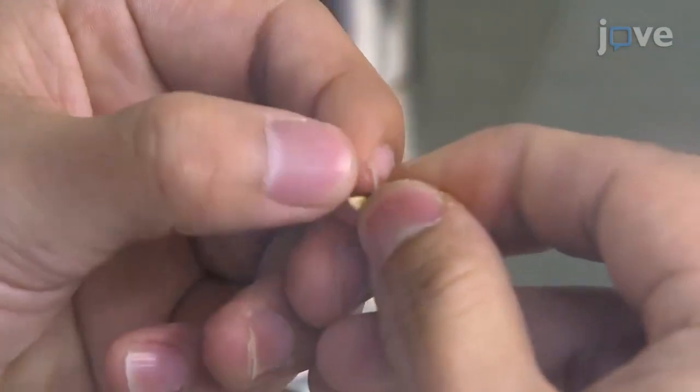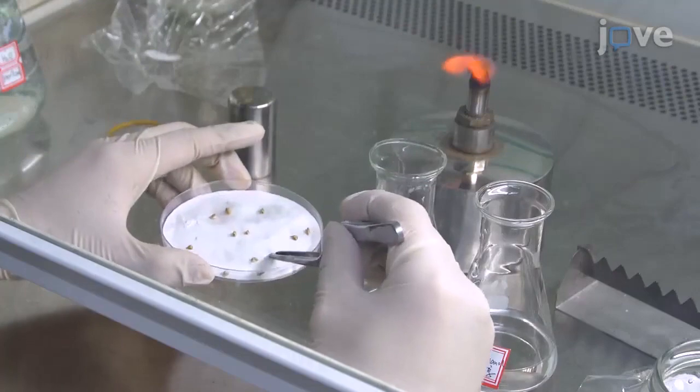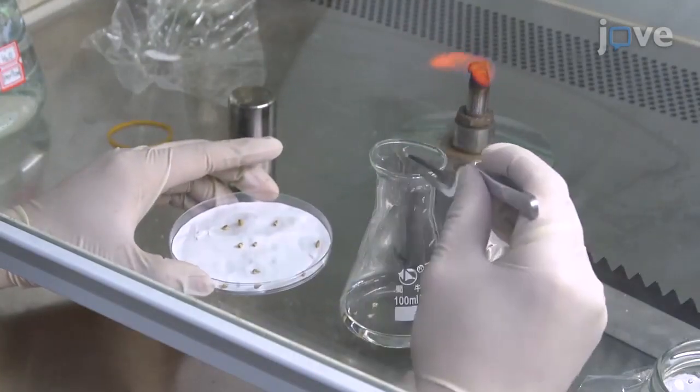When the seed coat can be easily removed, place 100 to 200 peeled seeds into a sterilized 100 milliliter conical flask containing 75% ethanol for 30 seconds.